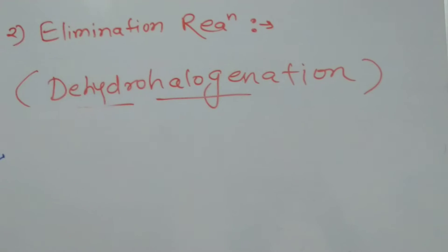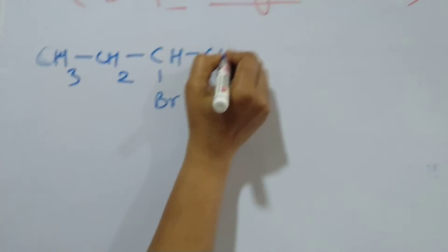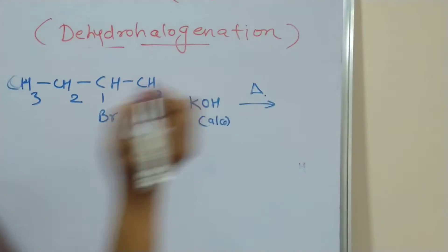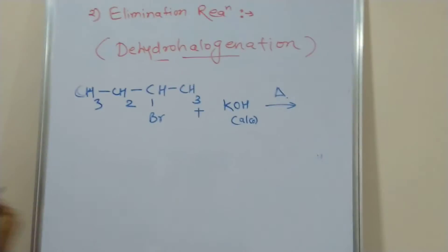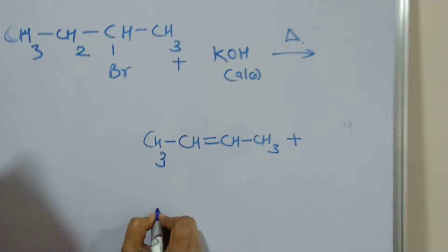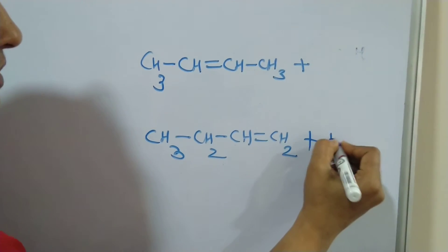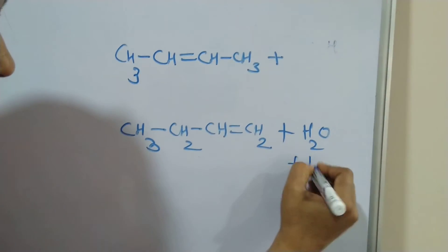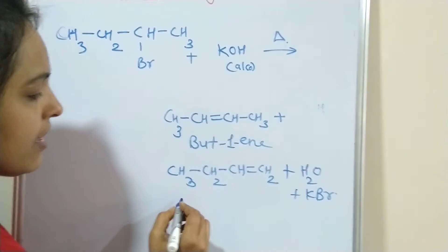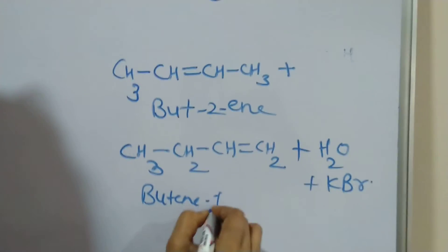Let us take one more example — 2-bromobutane. 2-bromobutane reacts with alcoholic KOH. Here we are getting a mixture of alkenes: CH3CH=CHCH3 plus CH3CH2CH=CH2, along with KBr and H2O. The first product is but-2-ene and the second product is but-1-ene.